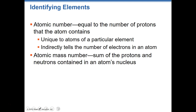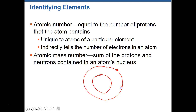Atomic number is equal to the number of protons that an atom contains — it's unique to each element. If an atom has an atomic number of one, it has one proton; if two, it has two protons, and so on. The atomic number also tells us the number of electrons in a neutral atom. So if it's got one proton, it has one electron; two protons means two electrons. We can start to visualize what the atom looks like on the planetary model from this information.